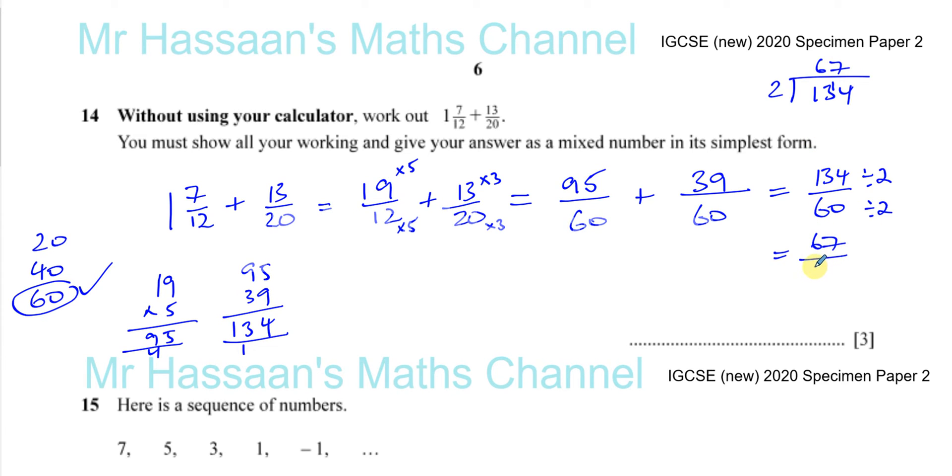Here it says write your answer as a mixed number, so you have to change it from an improper fraction into a mixed number. You can think of this as 30/30 plus something else over 30, what's left over.